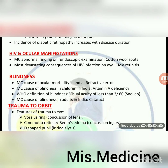HIV and ocular manifestations: most common abnormal finding on fundoscopic examination is cotton wool spots. Most devastating consequence of HIV infection on the eye is cytomegalovirus retinitis. Blindness: most common cause of ocular morbidity in India is refractive error. Most common cause of blindness in children in India is vitamin A deficiency. WHO definition of blindness: visual acuity of less than 3/60 on Snellen chart. Most common cause of blindness in adults in India is cataract.